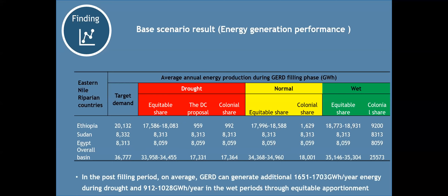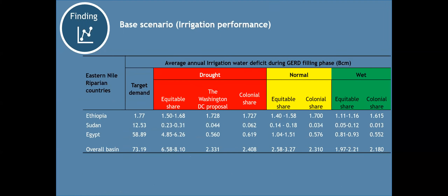When we look at energy generation after GERD becomes full, the equitable apportionment still shows over 1,000 GWh improvement in both drought and wet seasons, because once GERD is full there is constant energy generation expected. Under the Washington DC and colonial share proposals, you don't see any comparable change — the reasons for this will be shown in the reservoir water level results.